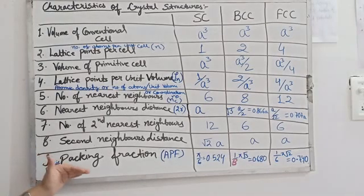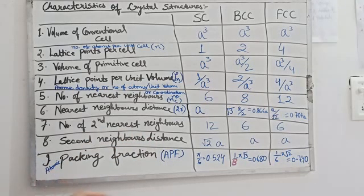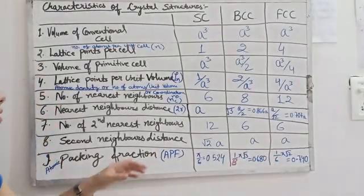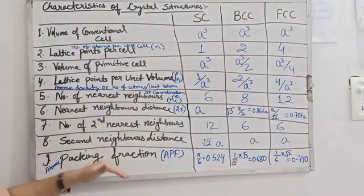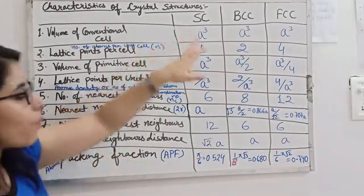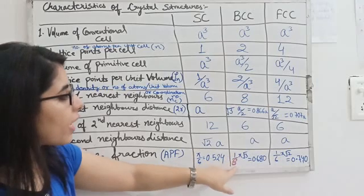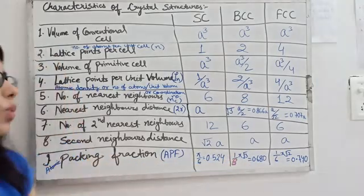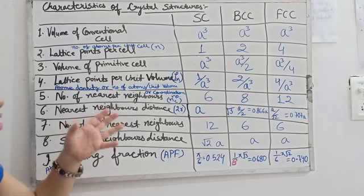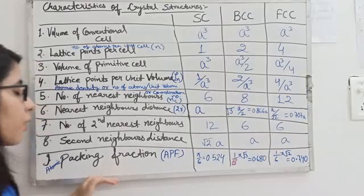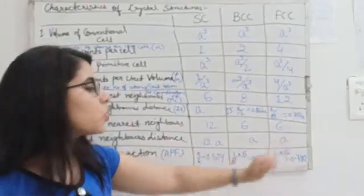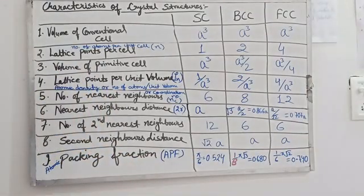The atomic packing fraction, or packing fraction, denoted by PF, has the following values. For simple cubic, the atomic packing fraction is π/6, which equals 0.524. For body centered cubic, it is π√3/8, which equals 0.680. And for face centered cubic, the atomic packing fraction is π√2/6, which equals 0.740.